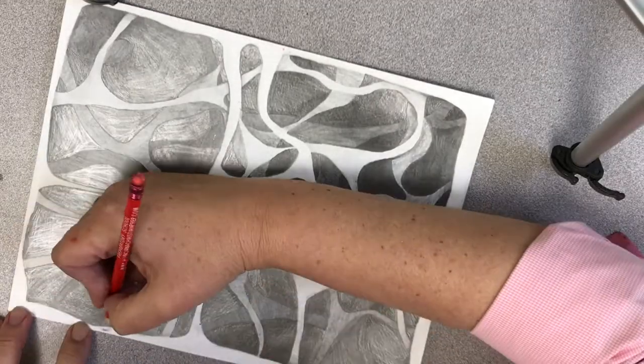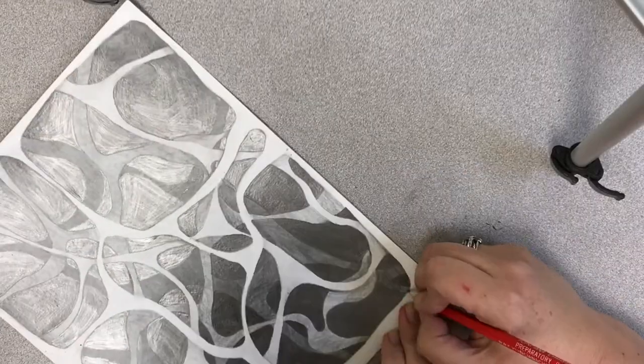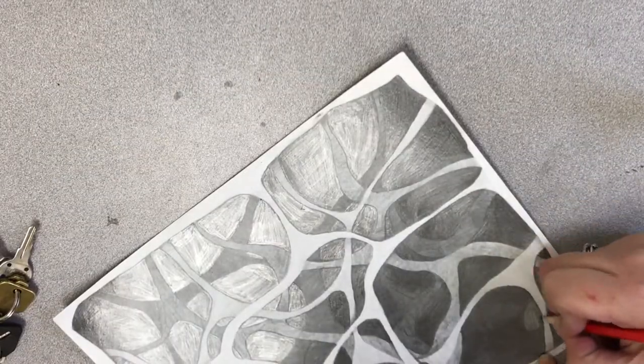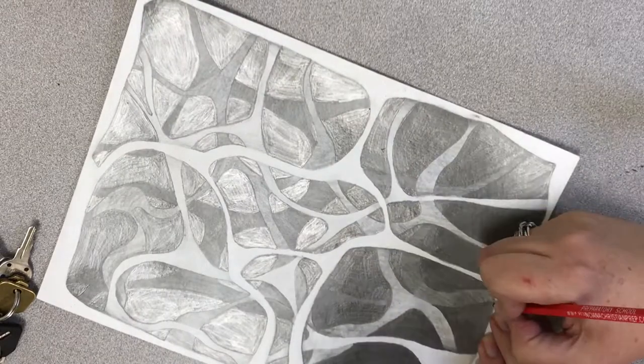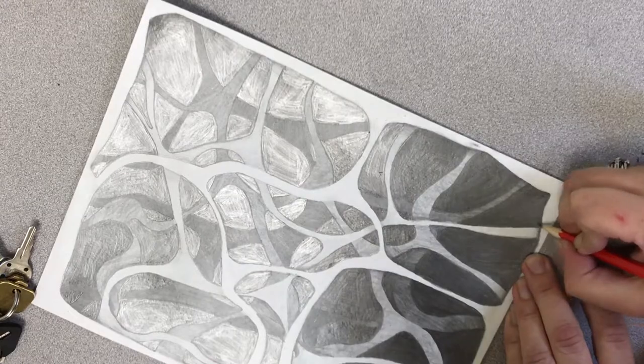Now what I'm doing is going around anywhere that you have a line behind another line, you can kind of make those lines a little bit more crisp by shading right where the lines overlap.